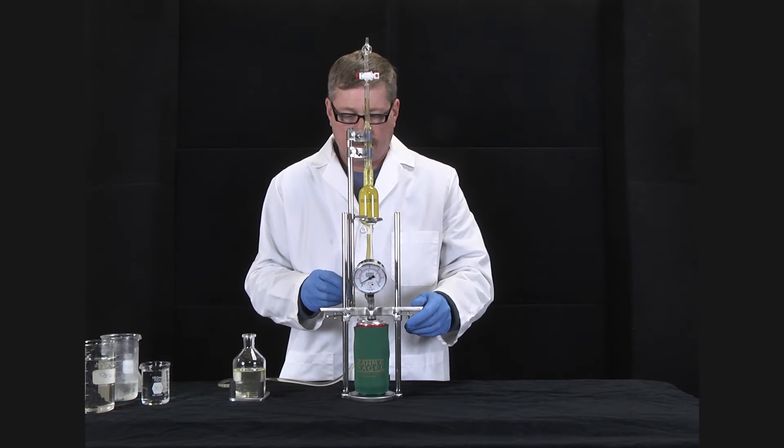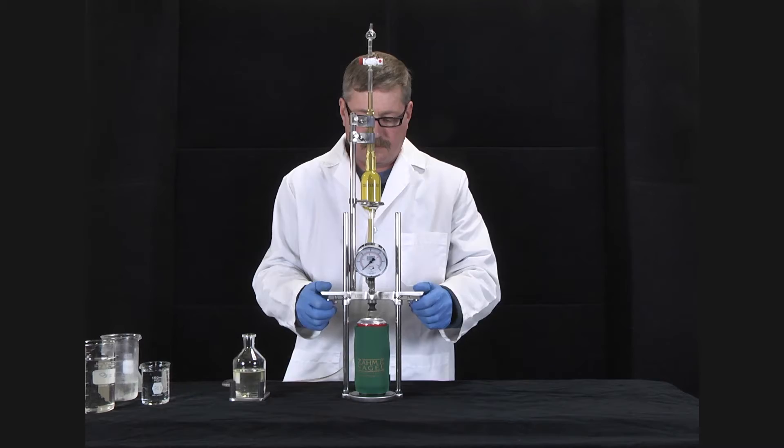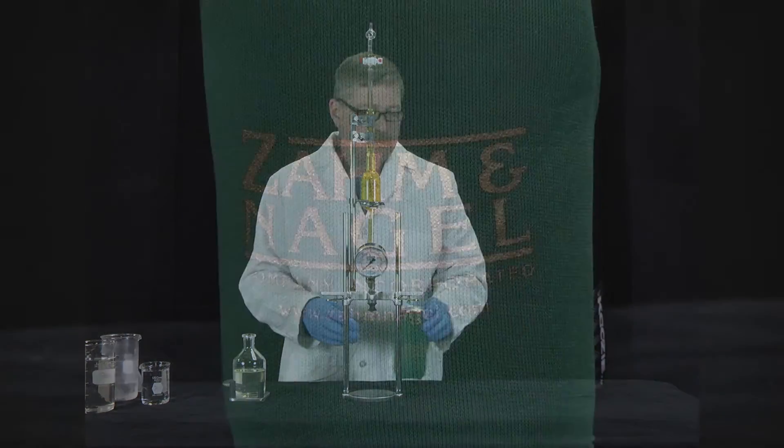Bleed off any remaining pressure in the container through the whitey valve. Depress the lock plates and raise the crossbar to a level that will allow removal of the container.